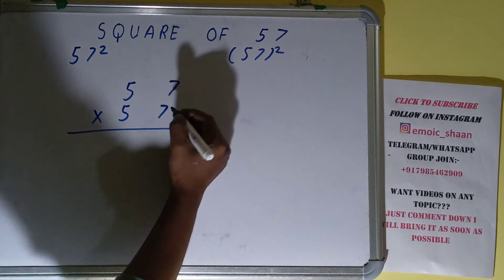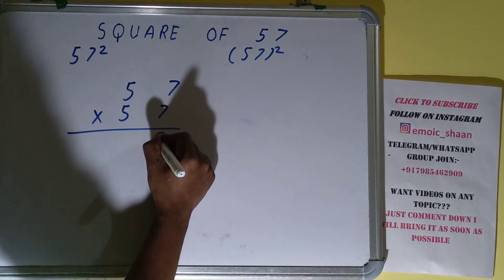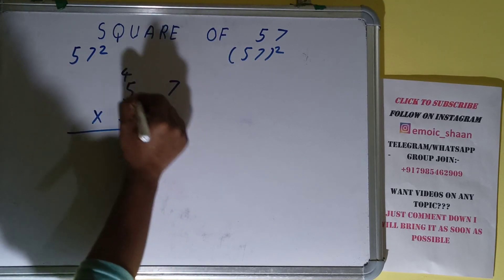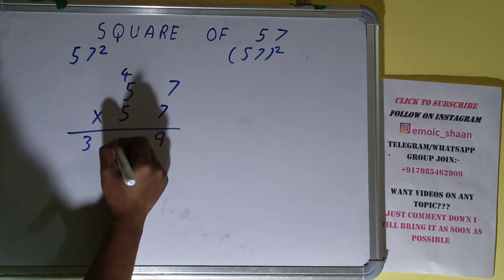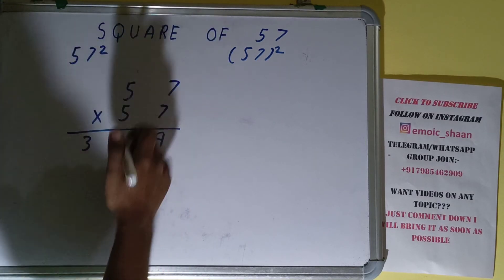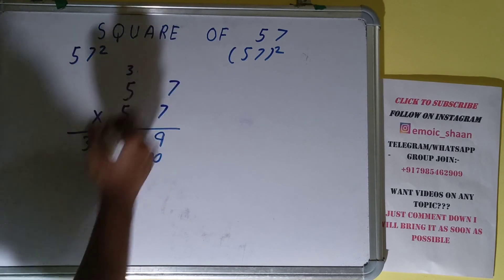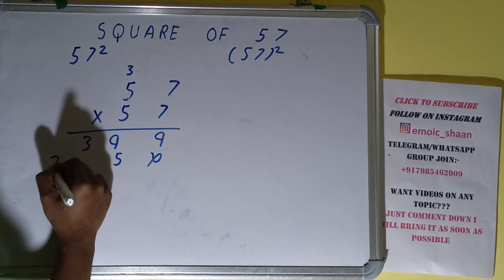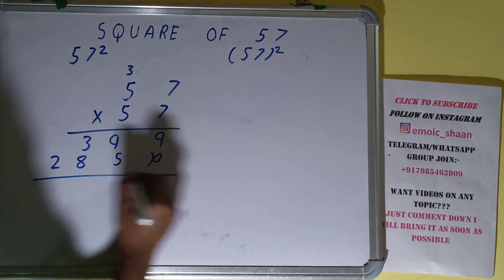7 times 7 is 49, 9 down, 4 carry. 7 times 5 is 35 plus 4 equals 39. Now with this one: 5 times 7 is 35, 5 down, 3 carry. 5 times 5 is 25 plus 3 equals 28.